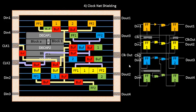Next is clock net shielding. Clock nets are considered to be the critical nets in your design because we have built the clock tree to maintain zero skew. But if there is a phenomenon of crosstalk that happens on these lines, everything you have designed on the clock side might get deteriorated. Let me give you a brief discussion on clock net shielding.